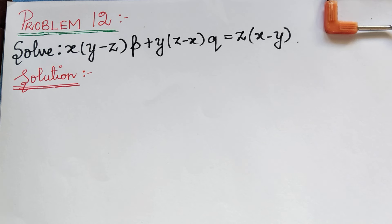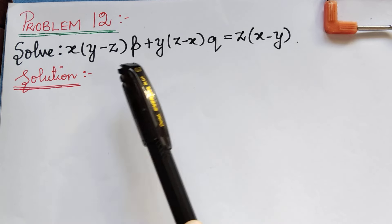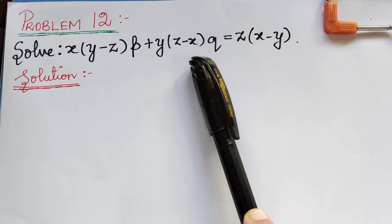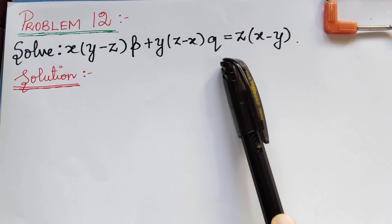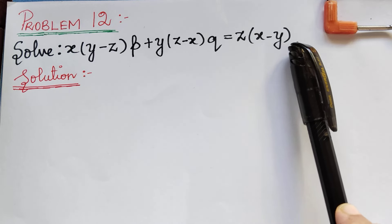Dear students, under the topic Lagrange's linear partial differential equations, here we have problem 12. The question is: solve x(y−z)p + y(z−x)q = z(x−y).